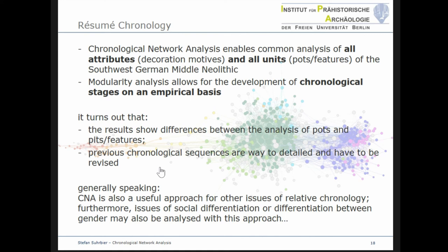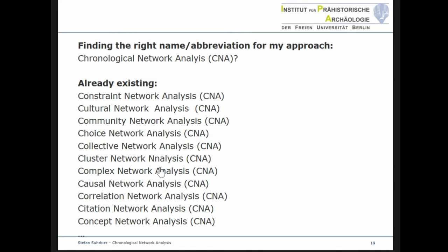Let me sum up. Chronological network analysis allows for an analysis of all attributes and units — either sherds or archaeological features like pits or graves — of the Southwest German Middle Neolithic period. Modularity analysis allows for the development of chronological stages on an empirical basis. The results show differences between the previously established stages and our new findings. In general, chronological network analysis is also an important approach for other issues of relative chronology, for example in connection with social differentiation or differentiation between genders. Finally, I would like to note a problem I realized only lately: I thought I had coined the term CNA for Chronological Network Analysis, but this abbreviation is already used for various other network analysis approaches. Therefore, I am searching for another abbreviation, and I would be grateful for your suggestions. Thank you for your attention and I look forward to your questions.